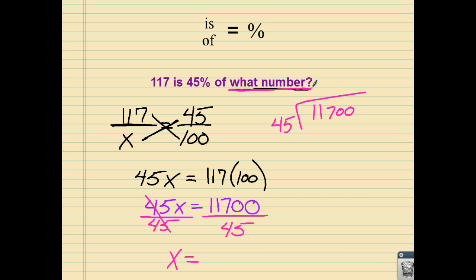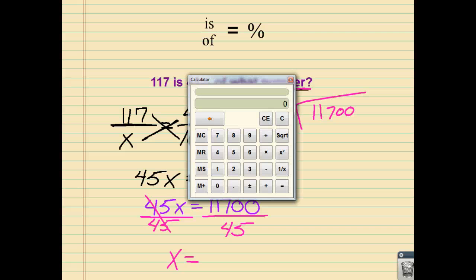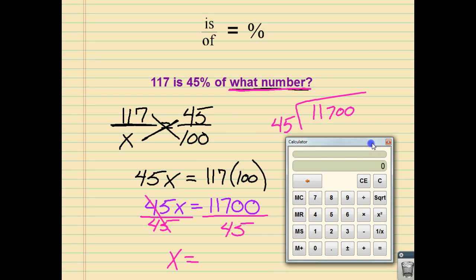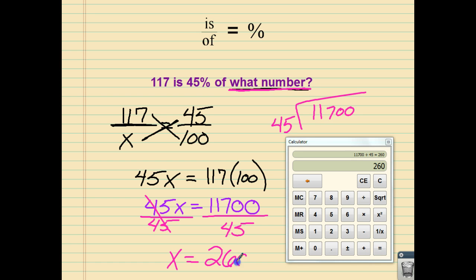To save time, I'm going to grab my calculator and say: 11,700 divided by 45 equals 260. Notice it's not a percentage — the answer needs to be a number, so x equals 260.